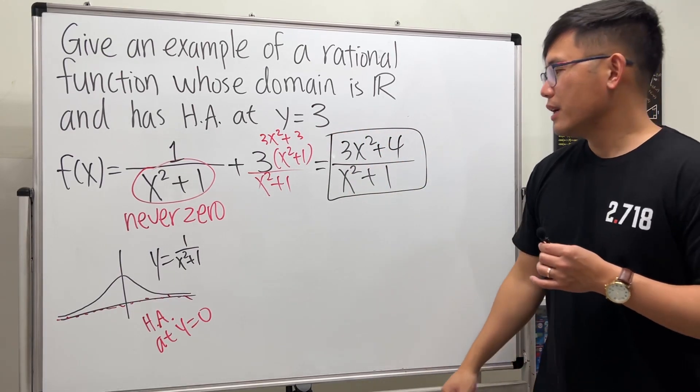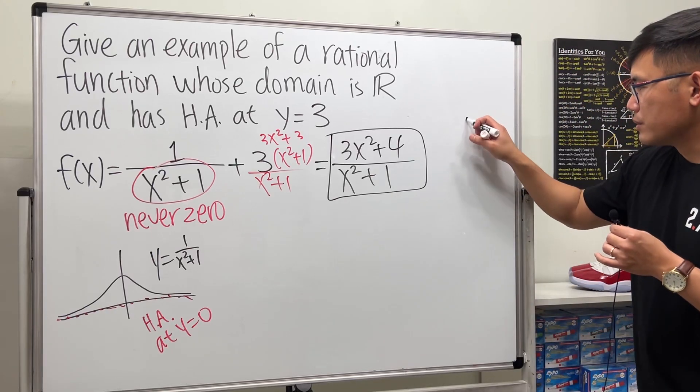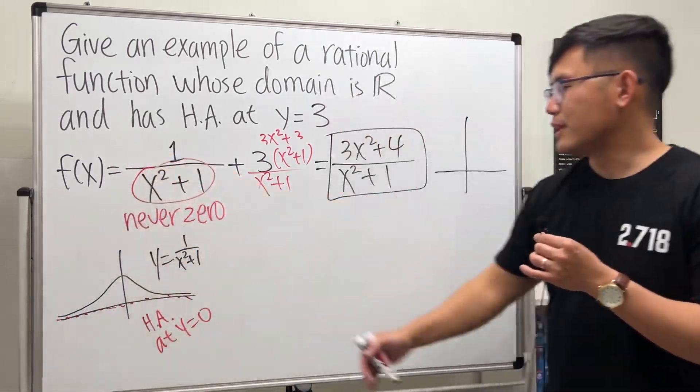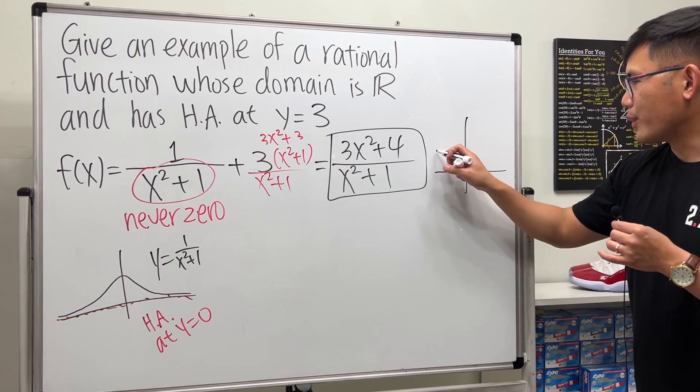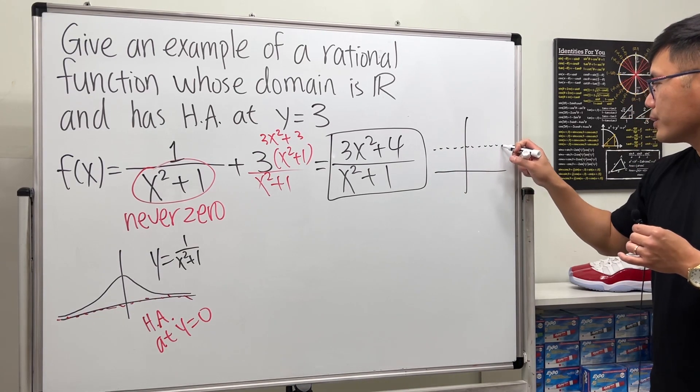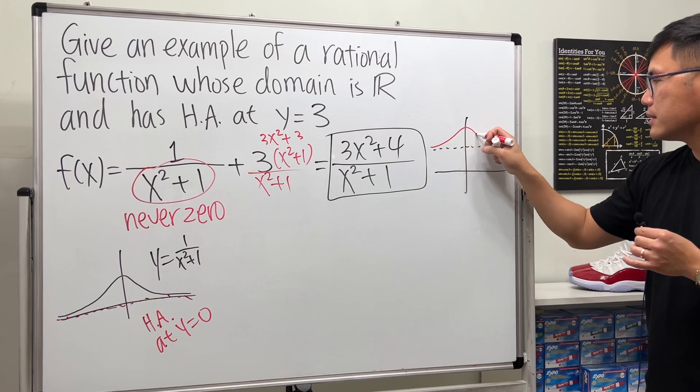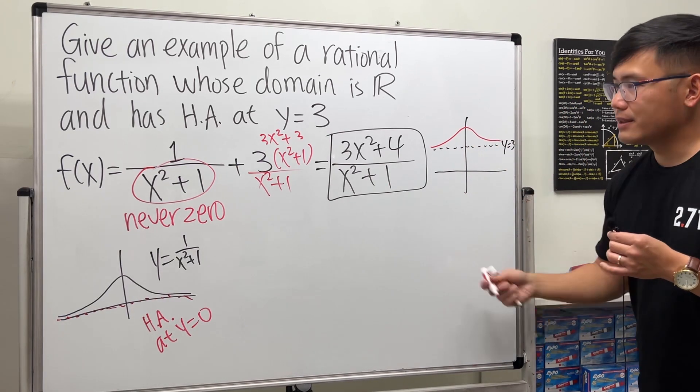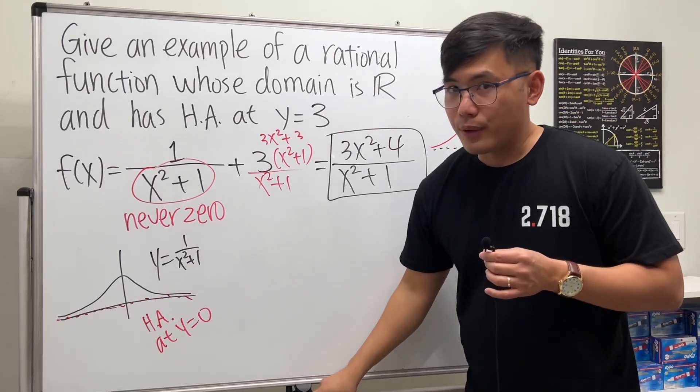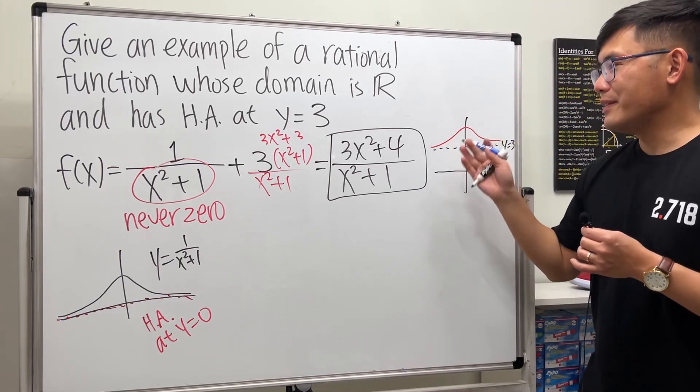This right here will work, and the picture for this will just be this, and you go up three times, so we have a horizontal asymptote at y equals 3, and then the curve will look like this.